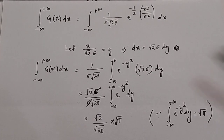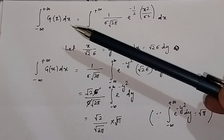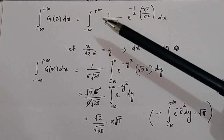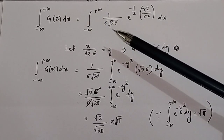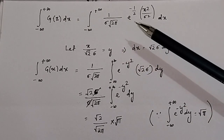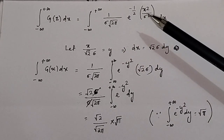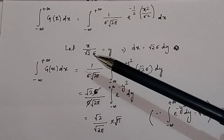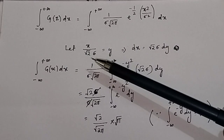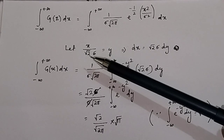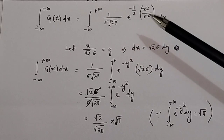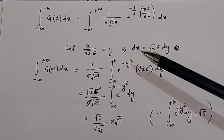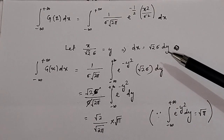We write the integral of g(x) dx from minus infinity to plus infinity as the integral from minus infinity to plus infinity of 1 divided by sigma times the square root of 2 pi, times e to the power of minus one-half x squared divided by sigma squared, dx. We substitute x divided by root 2 sigma equal to y, so that dx equals root 2 sigma dy.